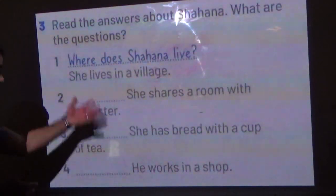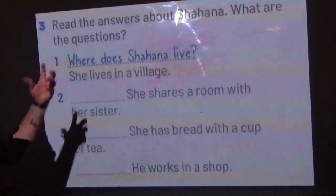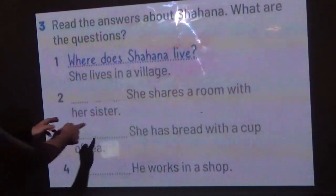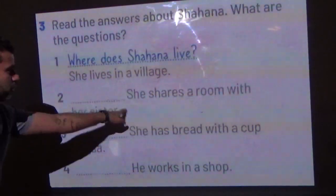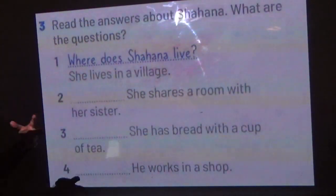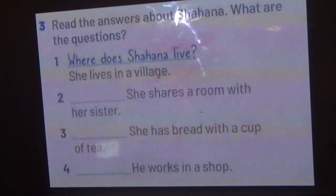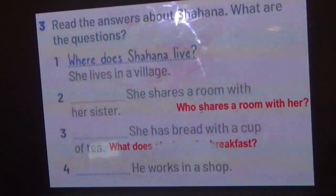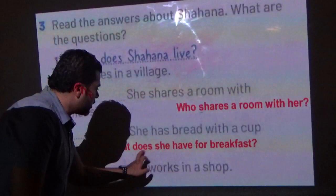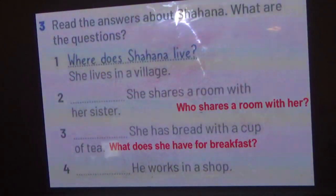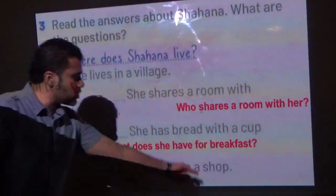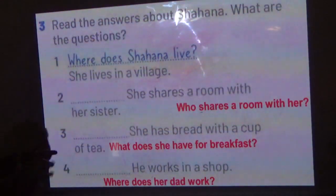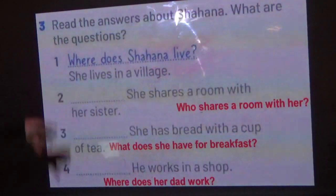Now make questions from the answers. Number two: the answer is 'she shares a room with her sister' — we ask about people using 'who', so the question is: who shares a room with her? Number three: she has bread with a cup of tea — what does she have for breakfast? Number four: her dad works in a shop — where does her dad work?